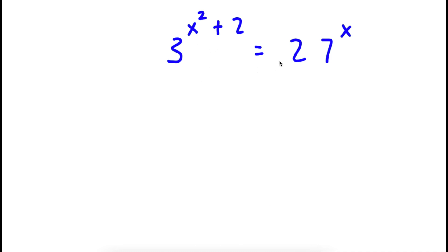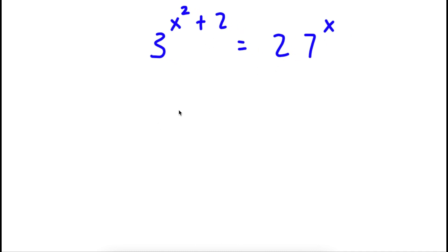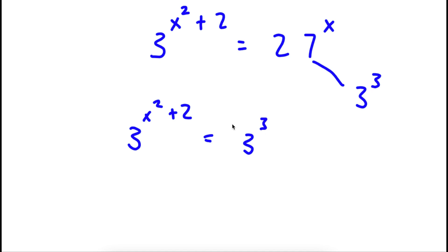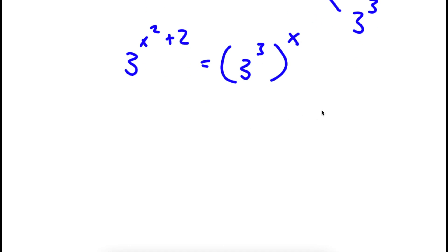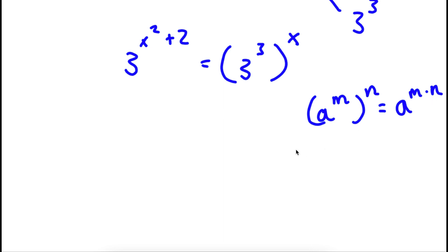Alright, so I have 3 to the power of x squared plus 2 is equal to 27 to the power of x. The first thing I'm going to do is change 27 to 3 to the power of 3, because 27 equals 3 cubed. So substituting, I get 3 to the power of x squared plus 2 is equal to 3 to the power of 3 to the power of x. Using the power of a power rule, that becomes 3 to the power of 3x.